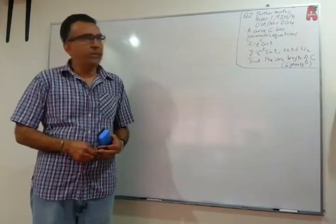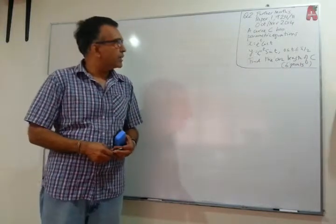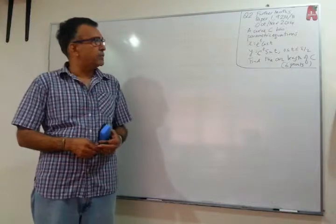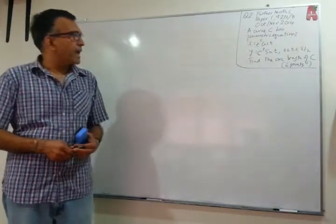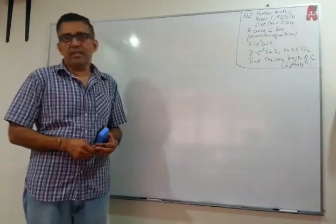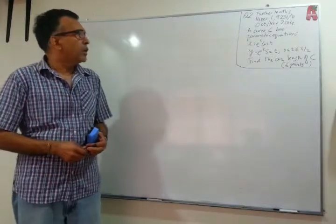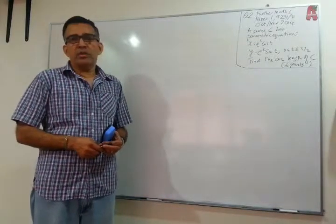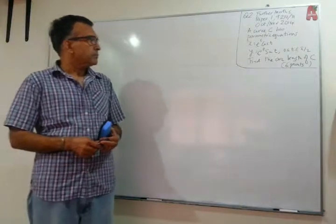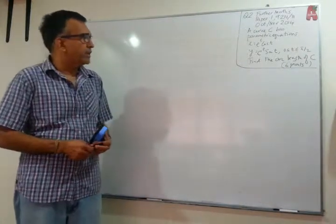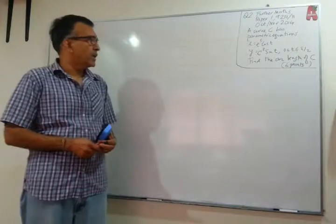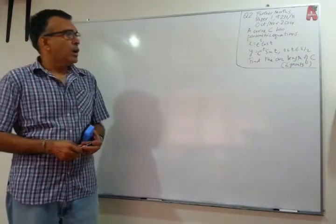The curve C has parametric equations: x equals e to the power of t, cos t, and y equals e to the power of t, sin t, for values of t between 0 and π/2. We are asked to find the arc length of C.